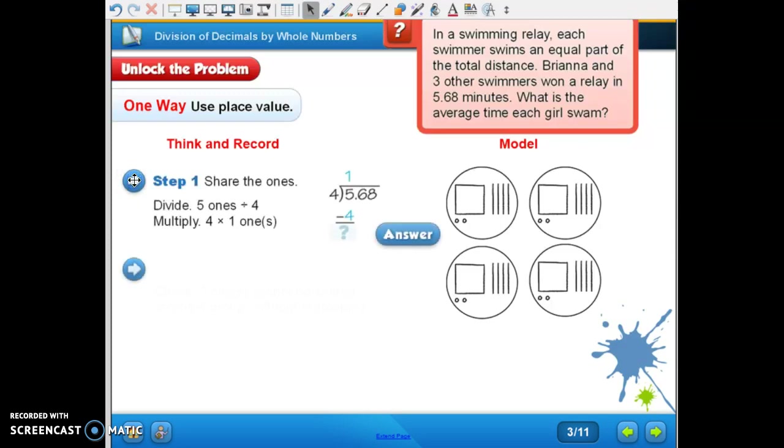Think and record. This is one way you can do it. Step one, share the ones. Divide five ones divided by four, which we already did. So four goes into five one time. We'd write our four down and then five minus four is one.